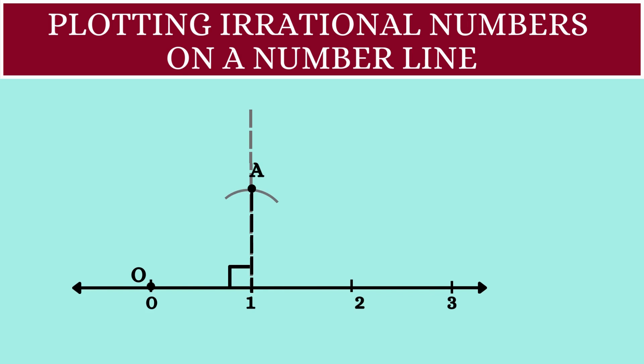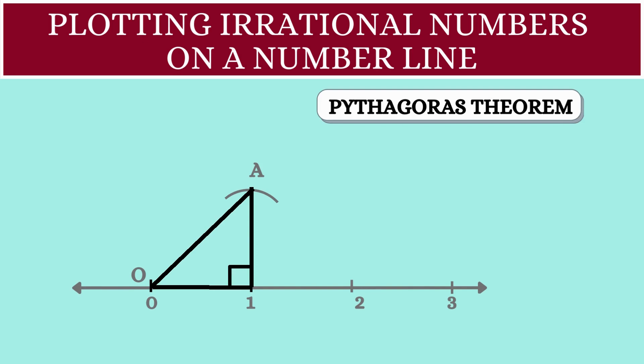Now, we'll join OA. Since this is a right-angled triangle, we can use the Pythagoras theorem. Square of the hypotenuse will be the sum of squares of the other two sides. Here, the hypotenuse is OA and the two sides are 1 unit each.